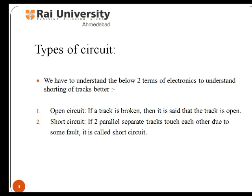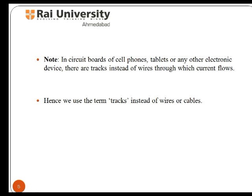One is an open circuit, in which if a track is broken, then it is said that the track is open. Another is a short circuit, in which if two parallel separate tracks touch each other due to some fault, that is known as short circuited. The tracks are not visible as they are drawn inside the circuit boards.